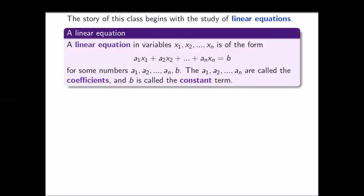Our story begins with the study of linear equations. A linear equation in n variables x1, x2 through xn is an equation which is linear in all the variables. This means the equation is of the form a1·x1 plus a2·x2 plus ... plus an·xn equals b, for some numbers a1 through an and b. The first n of these, a1 through an, are called the coefficients, and b is called the constant term.